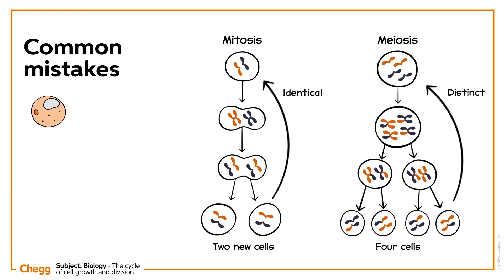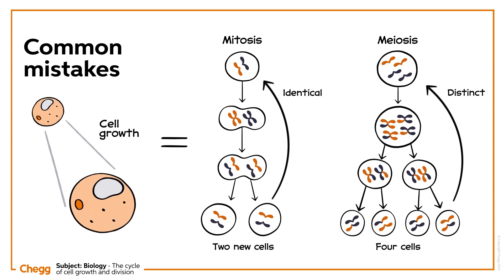These methods of cell division are distinct from cell growth. Cell growth refers to an increase in an individual cell's size — its cell surface, chromosome number, and cytoplasmic mass all increase. In cell division, on the other hand, a parent cell is divided into two or more daughter cells.